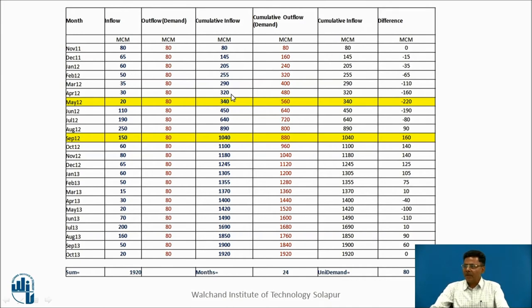Similarly, we have cumulative outflow or cumulative demand values. Since demand is constant at 80 each month, the cumulative demand goes as 80, 160, 240, 320, 400, and so on.